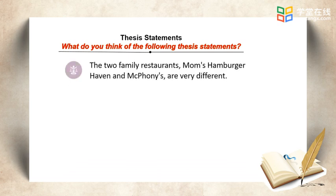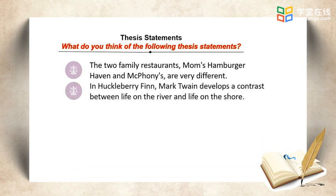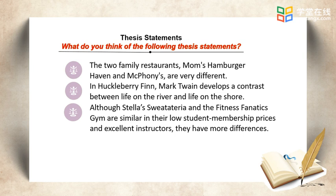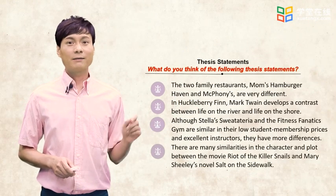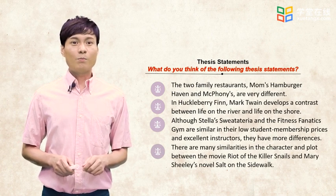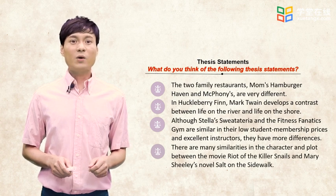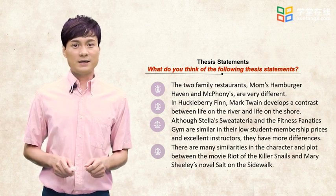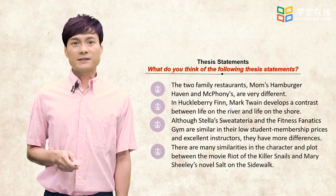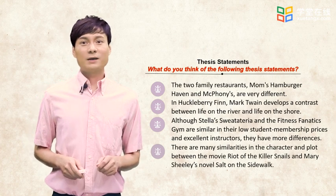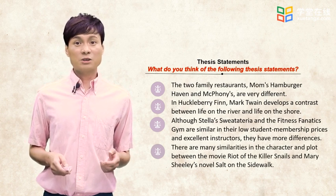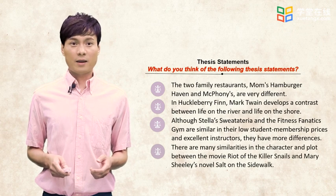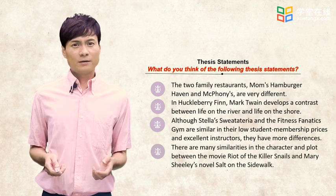There are four thesis statements. Think about the criteria of a good thesis statement you've learned in the previous weeks. Look at statement one. We can see the two subjects, Mom's Hamburger Haven and McFourney's, and we can also tell that it is from a contrast essay. But what are the differences? We don't know. Statement two: it's clear that there are two subjects, life on the river and life on the shore in Mark Twain's book, and it is a contrast essay. Again, what are the differences? Not specific enough.